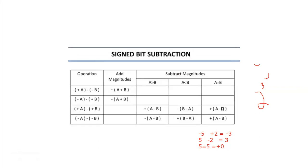Now for signed bit subtraction: for plus A minus minus B, you will do A minus B, because taking minus of minus becomes plus. So you perform A minus B and attach the sign bit of A. Then for minus A minus plus B, you substitute the sign bit of A.